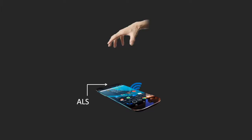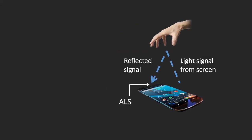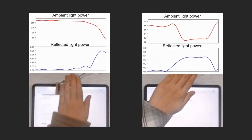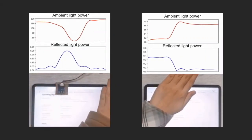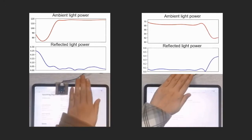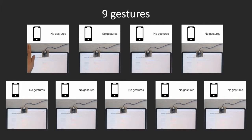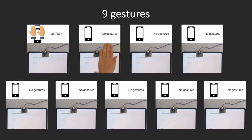The screen emits high-frequency light signals in its display content. The signal is reflected by the hand and finally received by the ambient light sensor. Different gestures cause different received signals, and the gesture can be inferred by analyzing data from the ambient light sensor.